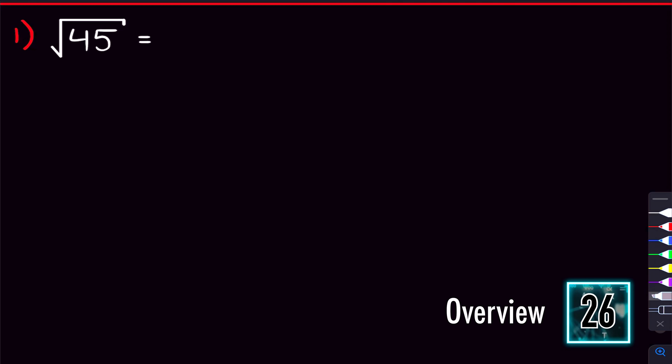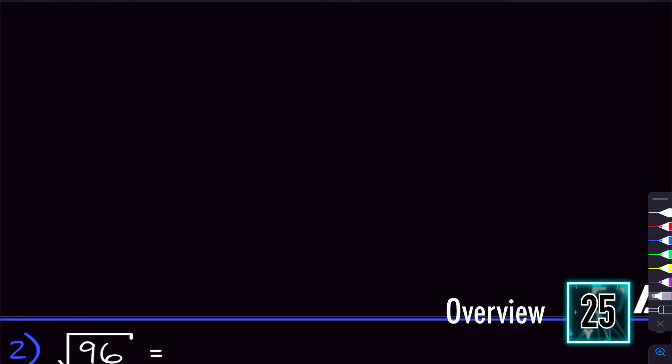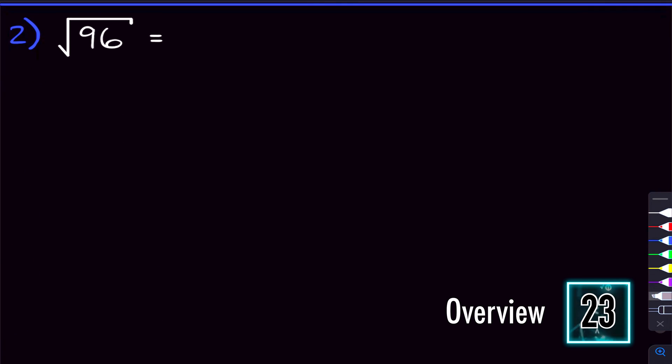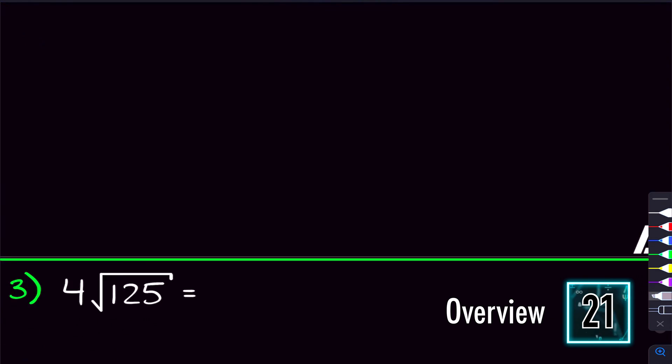By the end of this video, you're going to be simplifying square roots like they're nothing. And in about 30 seconds, here's how this video is going to get you there. We'll start off with a few examples where we're just simplifying a square root, getting it into simplest radical form.